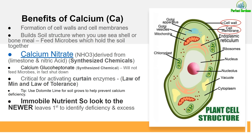Manganese is a semi-mobile nutrient. It's needed through the entire growing process and flowering process because it aids in over 300 enzyme reactions, and as we talked about, it's splitting the light for photosynthesis.